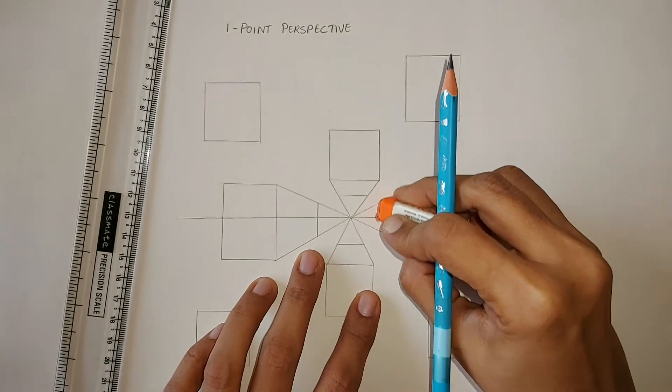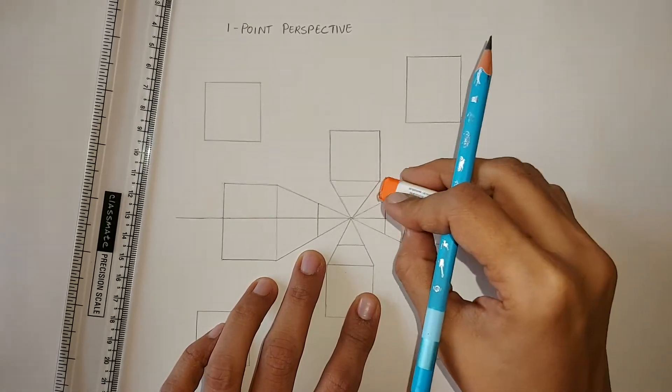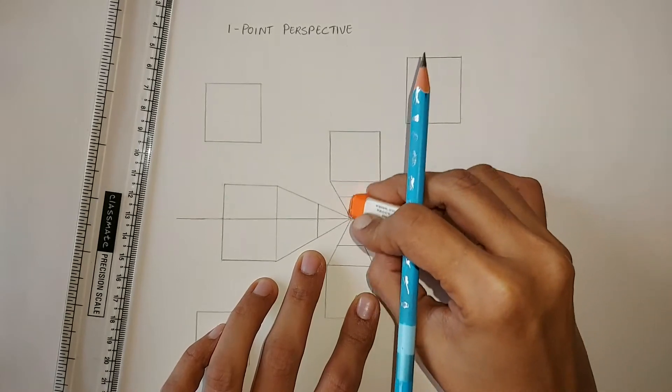We can erase all the extra lines to get a perfect cube now. Right now, I am not erasing them all to show them together.